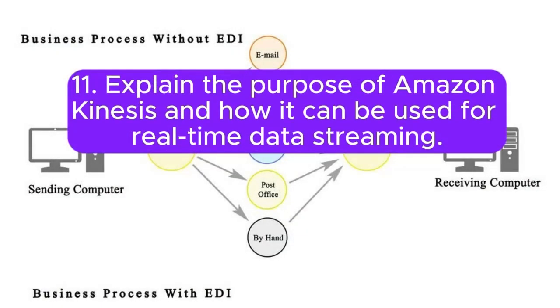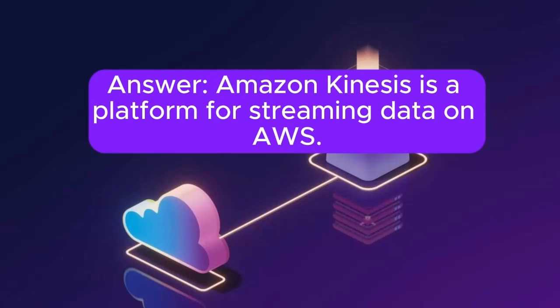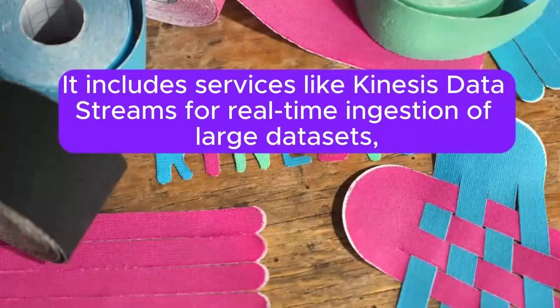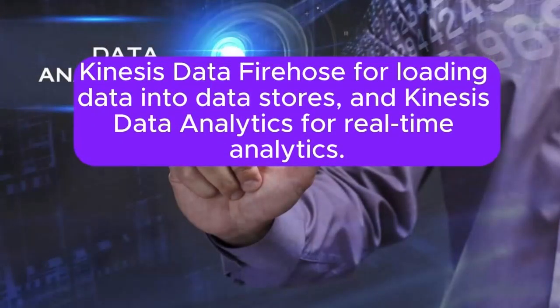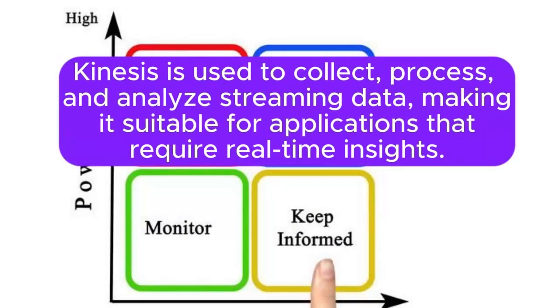11. Explain the purpose of Amazon Kinesis and how it can be used for real-time data streaming. Answer: Amazon Kinesis is a platform for streaming data on AWS. It includes services like Kinesis Data Streams for real-time ingestion of large datasets, Kinesis Data Firehose for loading data into data stores, and Kinesis Data Analytics for real-time analytics. Kinesis is used to collect, process, and analyze streaming data, making it suitable for applications that require real-time insights.